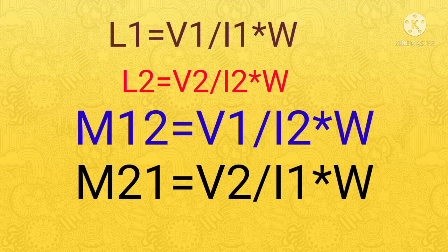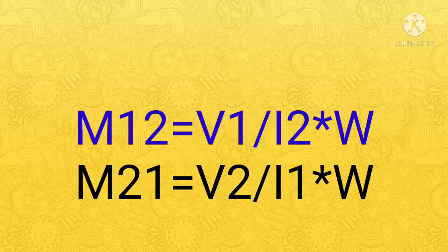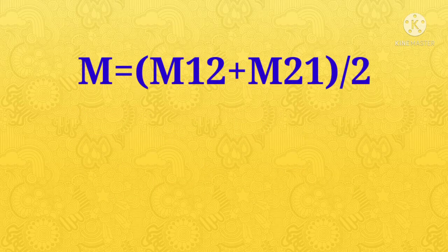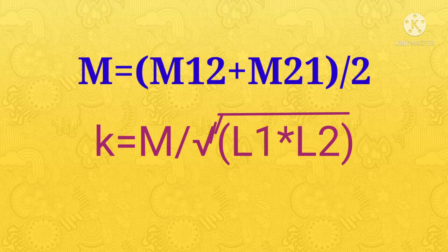These are the mutual inductance formulae. In order to find M12, we need to take the ratio of V1 over I2 times ω. In order to find M21, we need to take the ratio of V2 over I1 times ω. The actual mutual inductance M can be obtained by taking the average of M12 and M21. Now we know three parameters — the mutual inductance M, L1, and L2. By using these three, we can find the coefficient of coupling using the formula M over the square root of L1 times L2.